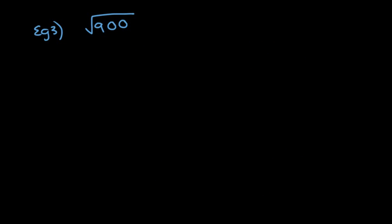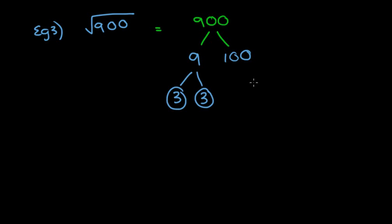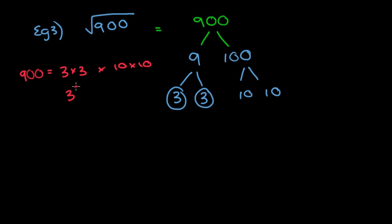Let's have a look at the next one — we're going to do the number 900. Pause it this time and see if you can answer this question, then check the answer. Let's start breaking down 900. I'm going to use 9 and 100. You could use 3 and 300, or 90 and 10 — lots of different ways. 9 breaks down to 3 and 3, and they're both prime. 100 breaks down to 10 and 10. So we have 900 equals 3 times 3 and 10 times 10, which is 3 squared times 10 squared.